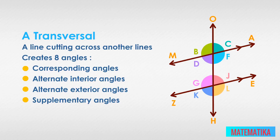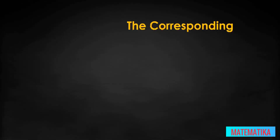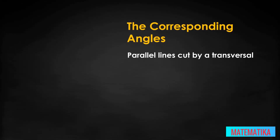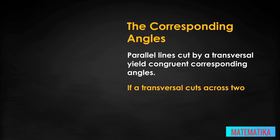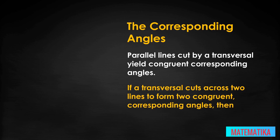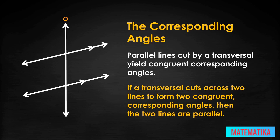Every one of these has a postulate or theorem that can be used to prove the two lines MA and ZE are parallel. The corresponding angles postulate states that parallel lines cut by a transversal yield congruent corresponding angles. We want the converse of that — the same idea the other way around. If a transversal cuts across two lines to form two congruent corresponding angles, then the two lines are parallel.